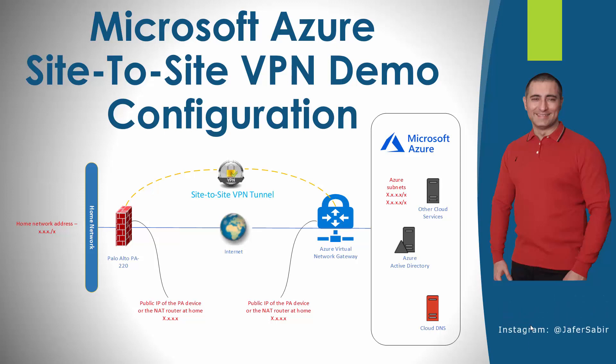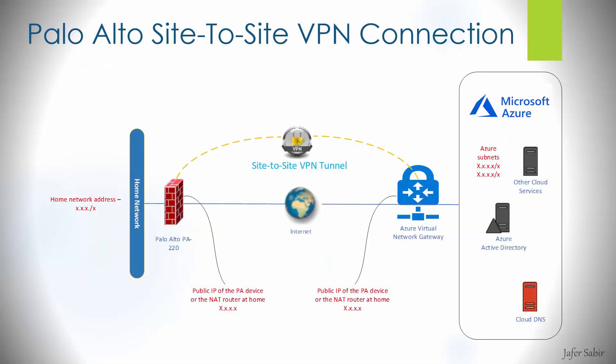Hi guys, in this video we will have a look at configuring a site-to-site VPN connection using Microsoft Azure. This is the VPN diagram between Azure and my Palo Alto home network. In this video we are only looking at the Azure side of the VPN configuration. On the left is my home network with the Palo Alto device, and on the right is my Azure network with an Azure VPN gateway, which will be used to create the VPN tunnel to the Palo Alto device.